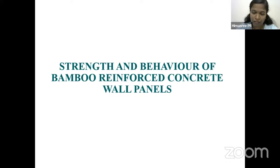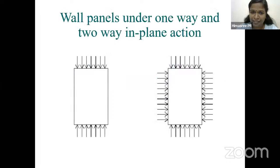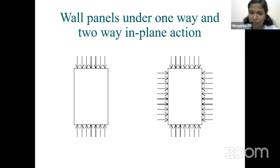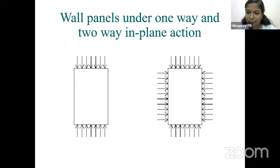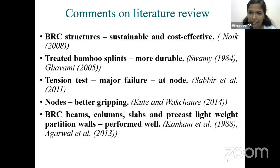My PhD topic is the strength and behavior of bamboo reinforced concrete wall panels. Wall panels are two-dimensional structural elements — they have negligible thickness compared to their length and width. Wall panels can be considered as one-way or two-way, depending on the loading action. If supported only along one direction, it is a one-way wall panel; if supported on all four sides, it is a two-way wall panel.